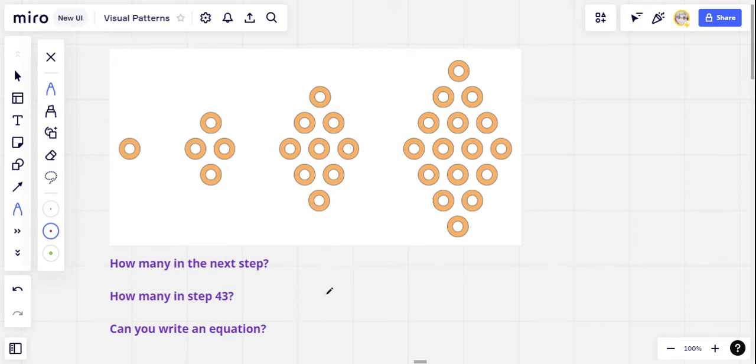Hello everybody, we are back with another visual pattern challenge. Here is our visual pattern, we've got these growing diamonds of cheerios or maybe spaghetti loops. Here's step one, here's step two, here's step three, here's step four, getting pretty big.